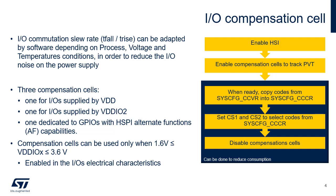The input/output commutation slew rate affecting rise and fall times can be adapted by software depending on process, voltage, and temperature conditions in order to reduce input/output noise on the power supply. The compensation cell can be used only when VDD-IO-X is within the range of 1.6V to 3.6V. Three compensation cells are embedded: one for input/outputs supplied by VDD, one for those supplied by VDD-IO2, and one dedicated to GPIOs with HSPI alternate function capabilities. The compensation cell generates an 8-bit value for the input/output buffer — 4 bits for NMOS and 4 bits for PMOS — which depends on PVT operating conditions: process, voltage, and temperature. These bits control the current slew rate and output impedance in the input/output buffer.